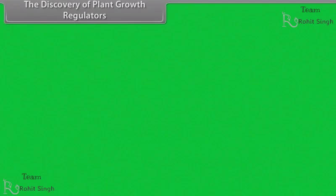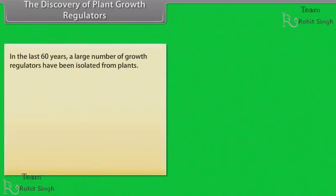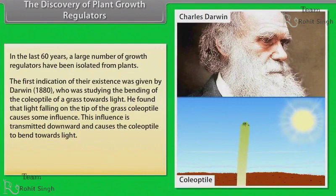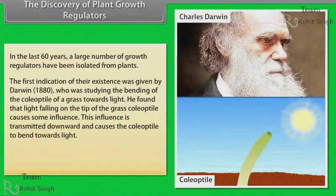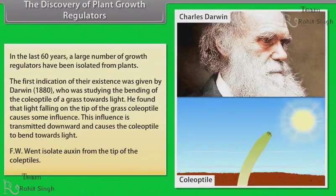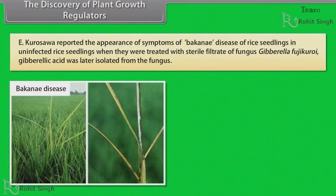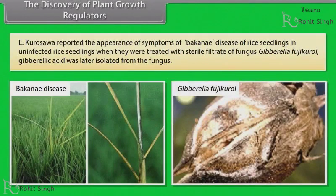In the last 60 years, a large number of growth regulators have been isolated from plants. The first indication of their existence was given by Darwin (1880), who was studying the bending of the coleoptile of a grass towards light. He found that the light falling on the tip of the grass coleoptile causes some influence, which is transmitted downward and causes the coleoptile to bend towards light. F.W. Went isolated auxin from the tip of the coleoptiles. E. Kurosawa reported the appearance of symptoms of bakanae disease of rice seedlings in uninfected rice seedlings when they were treated with sterile filtrate of fungus Gibberella fujikuroi. Gibberellic acid was later isolated from the fungus.